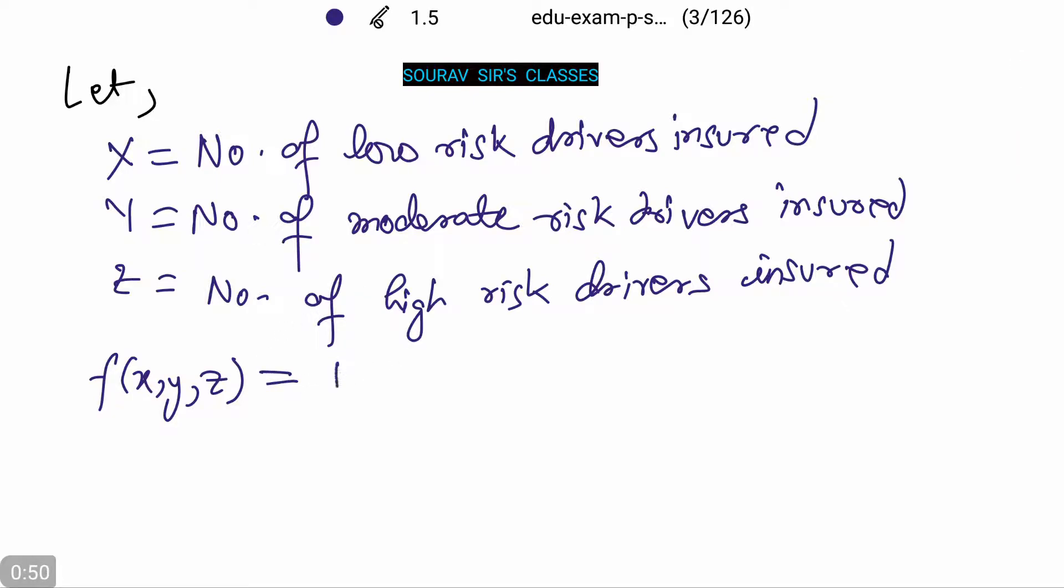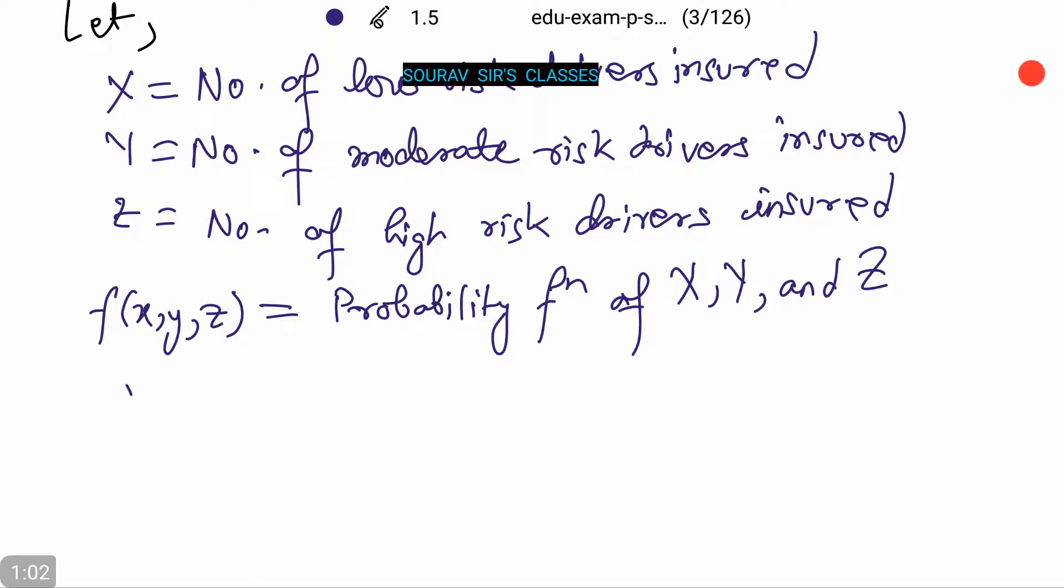Therefore, f(X,Y,Z) equals the probability function of X, Y, and Z. Then we see f is a trinomial probability function.